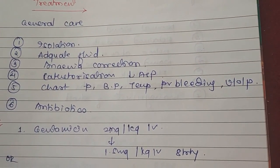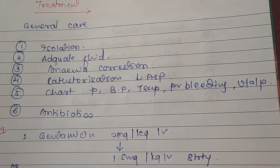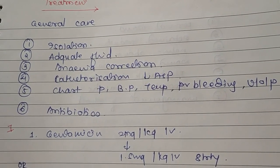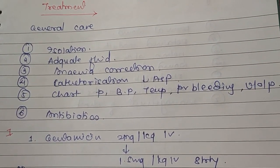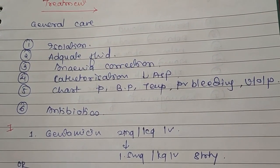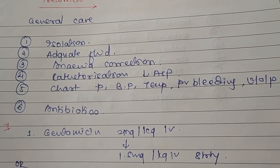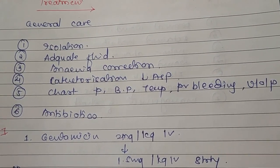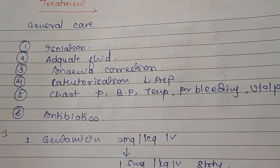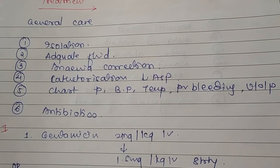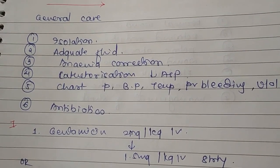For treatment of puerperal pyrexia, general care includes isolation of the infected mother or baby, adequate fluids to maintain electrolyte balance, correction of anemia, and prompt management of any further infectious pathology. Catheterization under aseptic precautions should be done, and a chart monitoring pulse, BP, temperature, per vaginal bleeding, and urine output must be maintained.